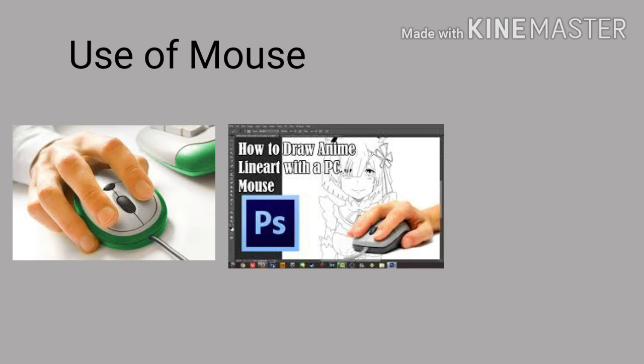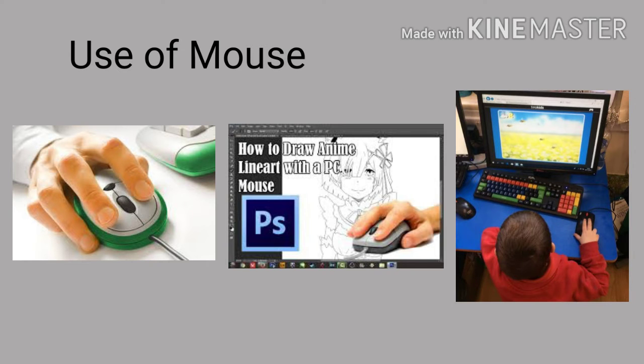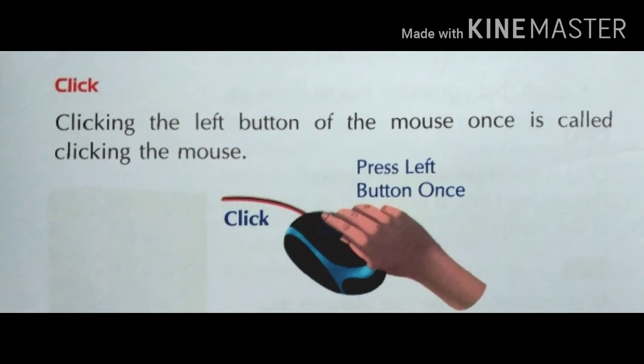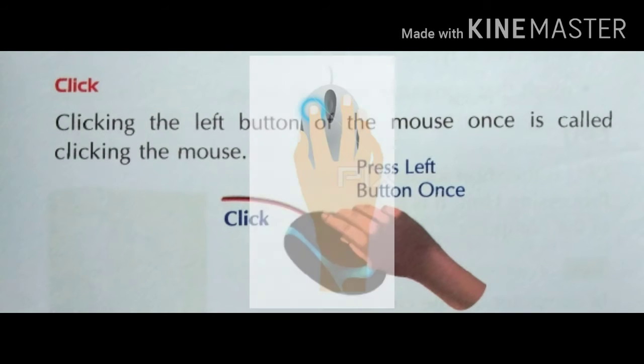Some types of actions can be performed using mouse. First is click. Clicking the left button of the mouse once is called clicking the mouse. You use the left button to select objects within the operating system. The left button is the main mouse button.